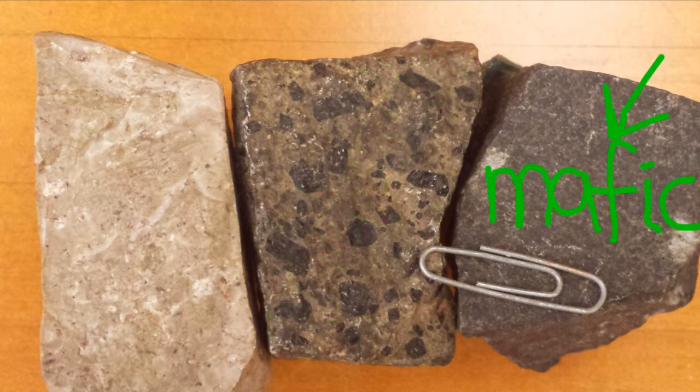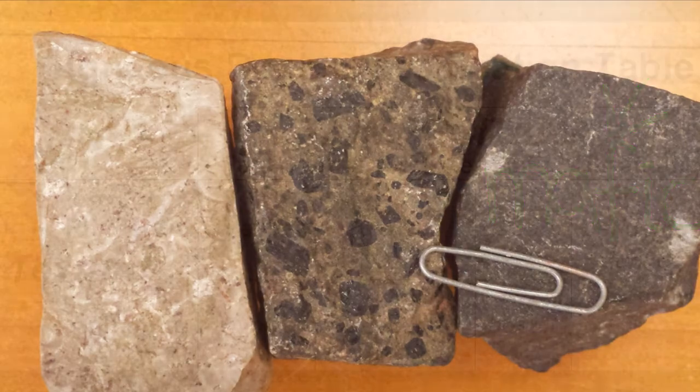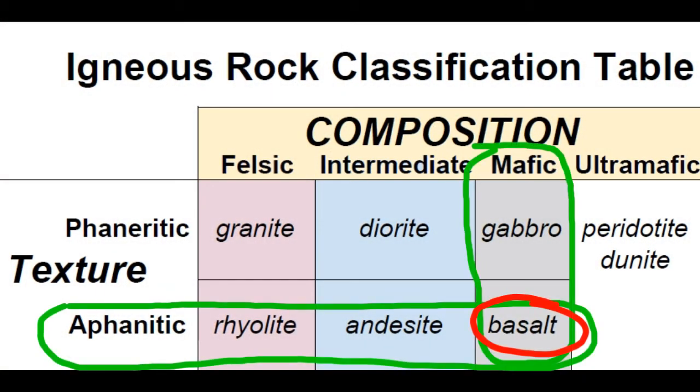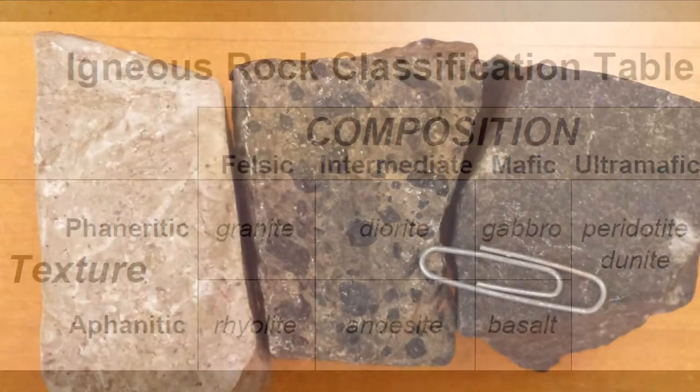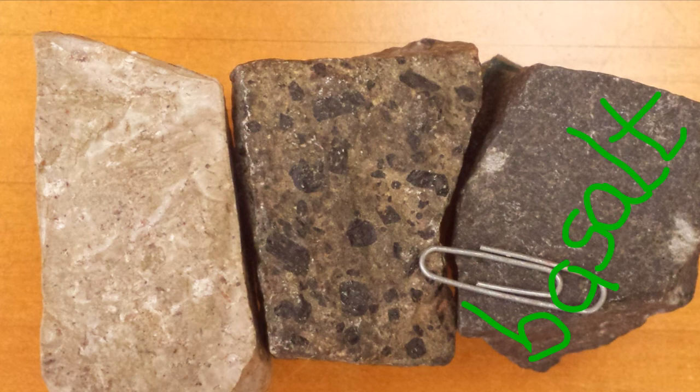This sample is really dark colored. This rock is mafic in composition. Iron and magnesium rich minerals are typically very dark colored and constitute a majority of the minerals in a mafic rock. In the igneous rock classification table, we find its name: basalt. Basalt is a mafic, aphanitic, igneous rock.